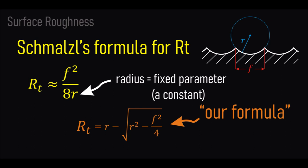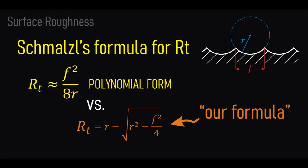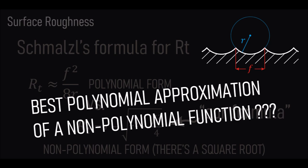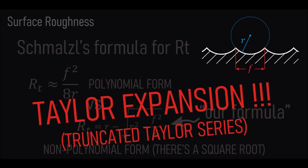Let's look at the form of the two formulae. If we consider the radius R as a fixed constant parameter and the feed rate F as a variable, we'll see that the Schmalz formula is expressed in a polynomial form. On the other hand, the exact formula is a non-polynomial function since there's a square root. Polynomials only allow addition, subtraction, multiplication and integer powers — the variable F cannot be at the denominator, nor under a square root. So what's the best polynomial approximation of a non-polynomial function? We know it is the Taylor expansion — in other words, the truncated Taylor series.